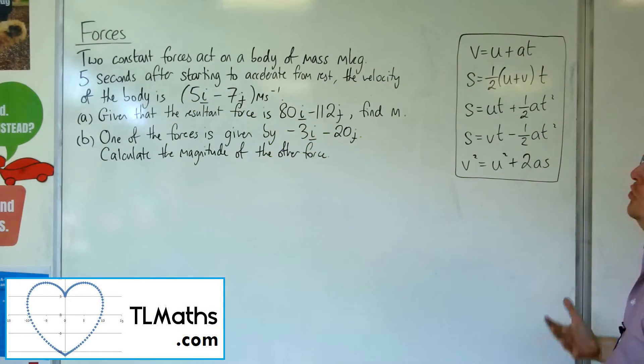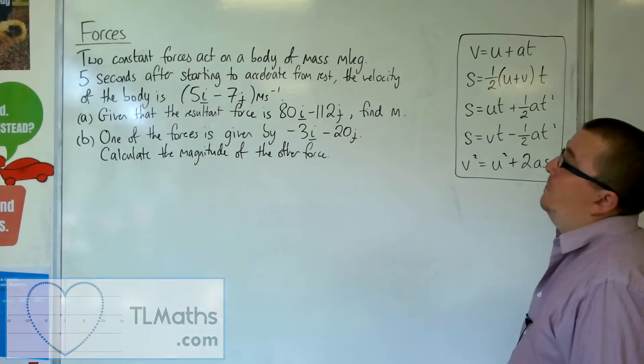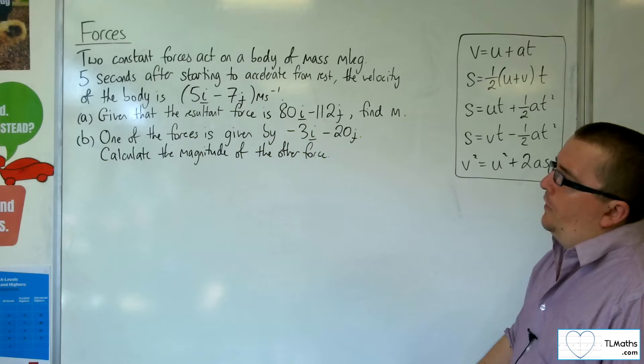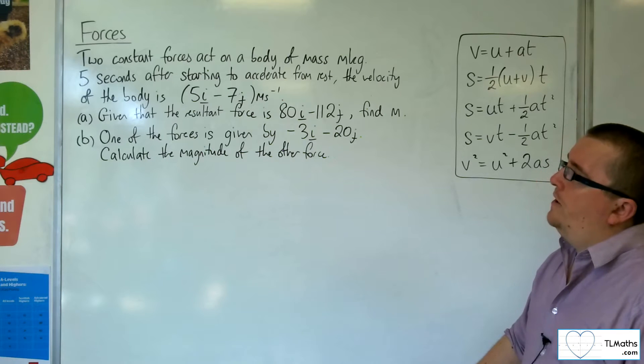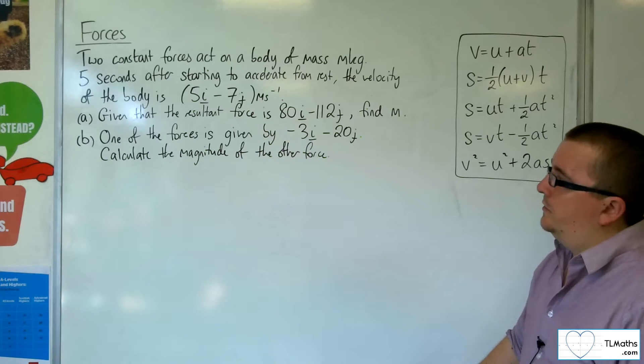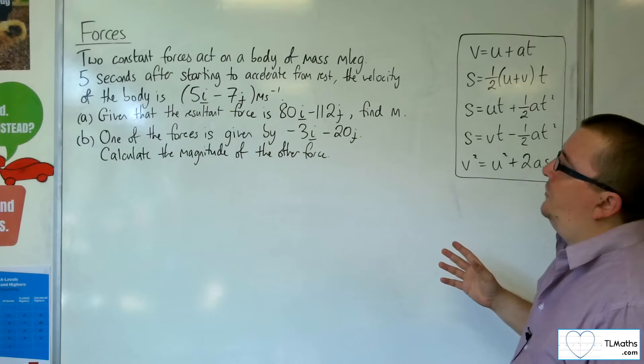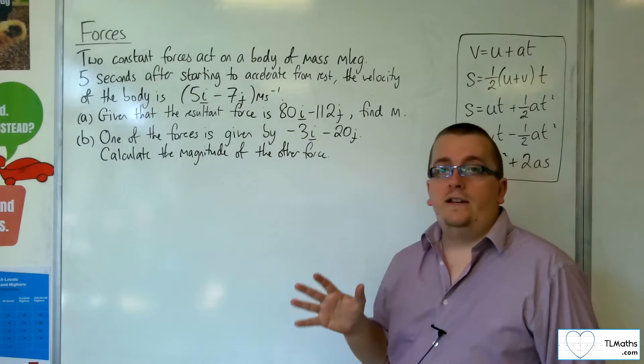In this video, we've got two constant forces acting on a body of mass m kilos. Five seconds after starting to accelerate from rest, the velocity of the body is 5i minus 7j meters per second. Given that the resultant force is 80i minus 112j, find m.